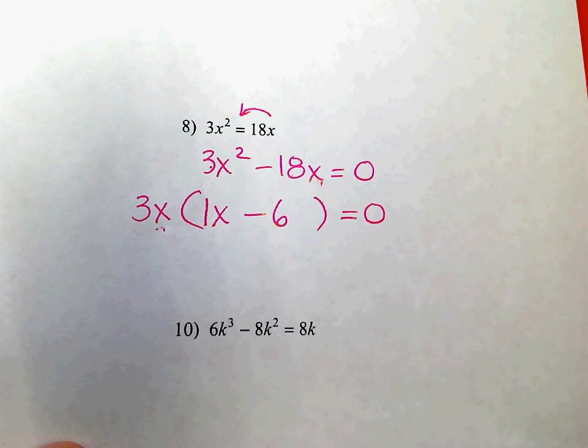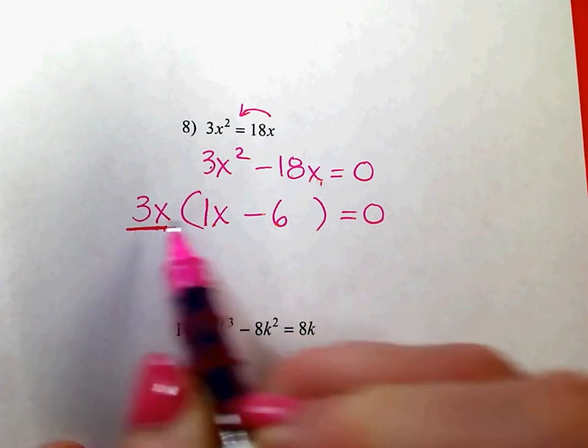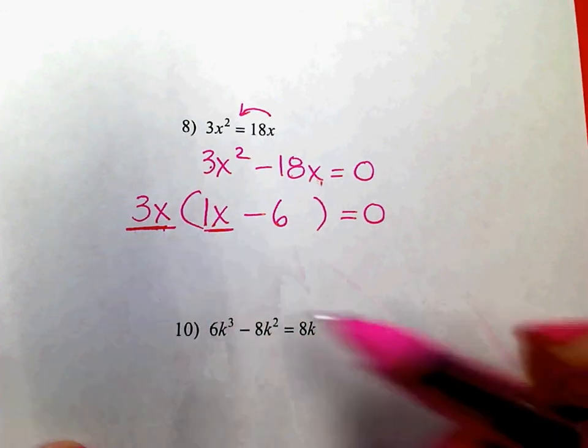you're done. It does not factor any further. So you do have two answers for x because you have an x here and you have an x here. So get those two answers.